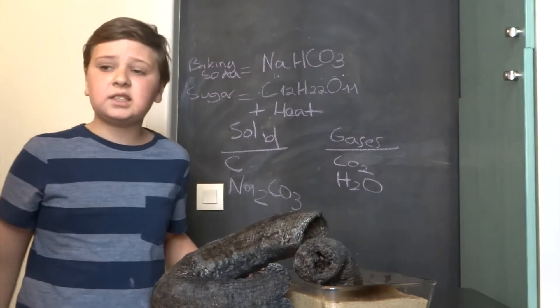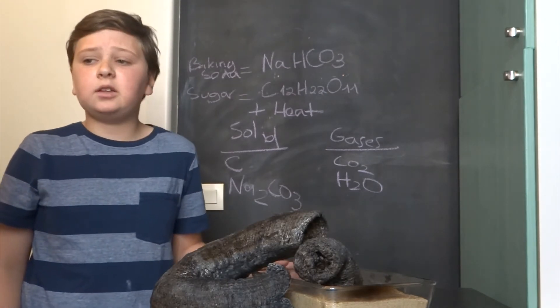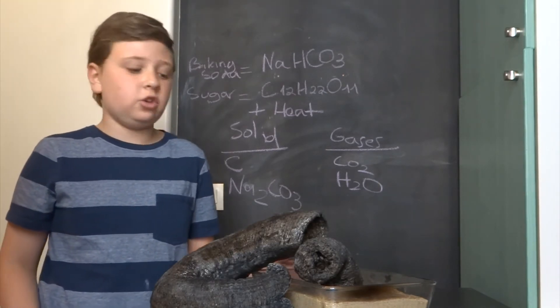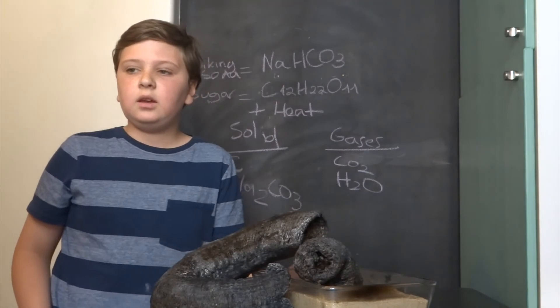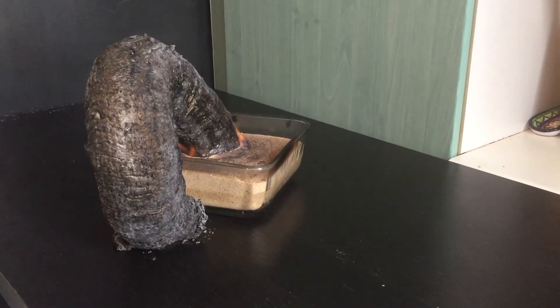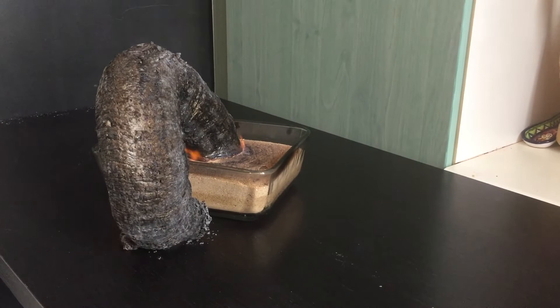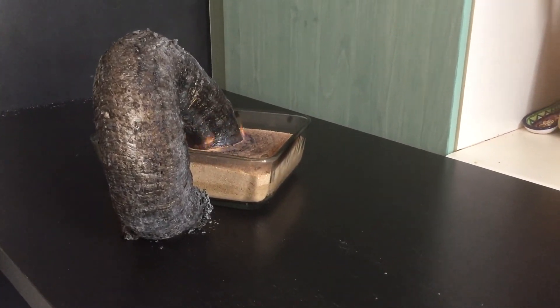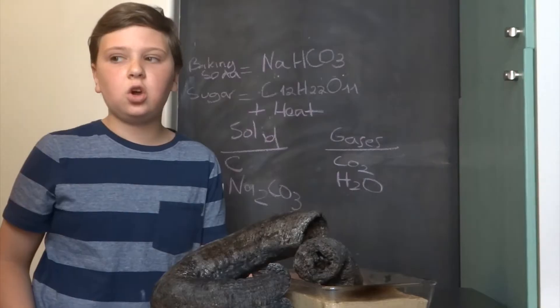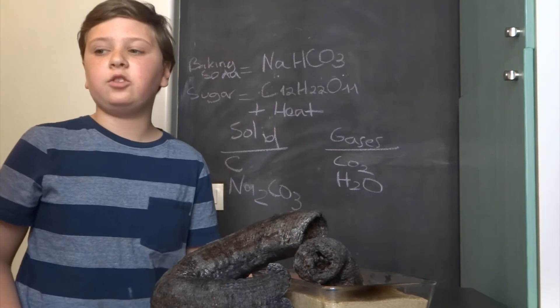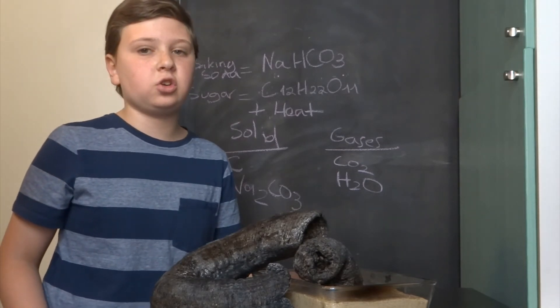The sand in this experiment doesn't chemically react with anything in the growing snake. Instead, it evenly distributes the heat from the burning lighter fluid to the sugar and the baking soda mixture, ensuring a slow and steady burn and the growth of a low carbon sugar snake.